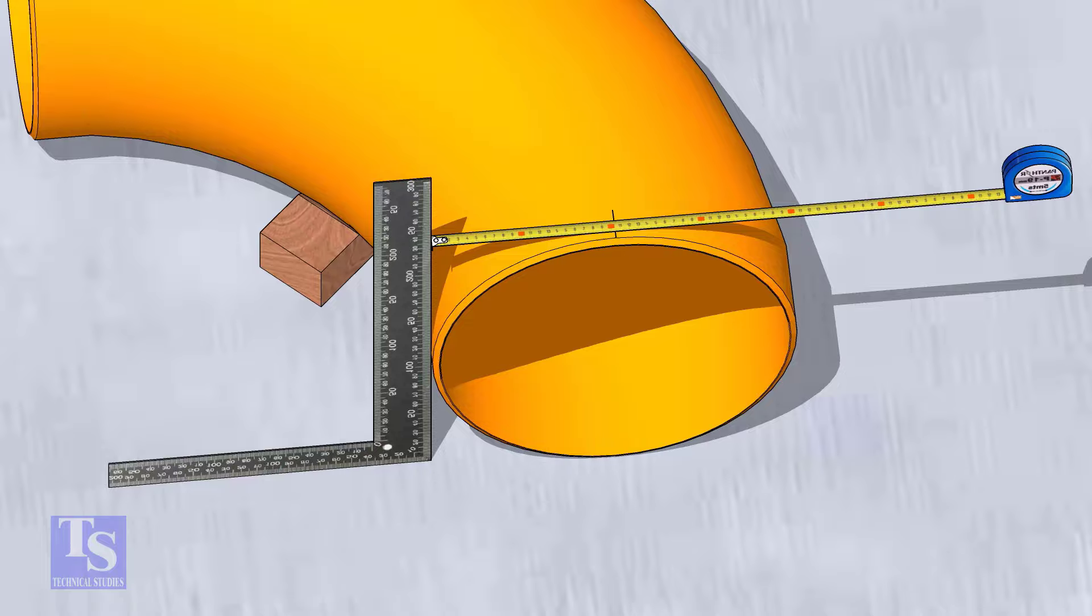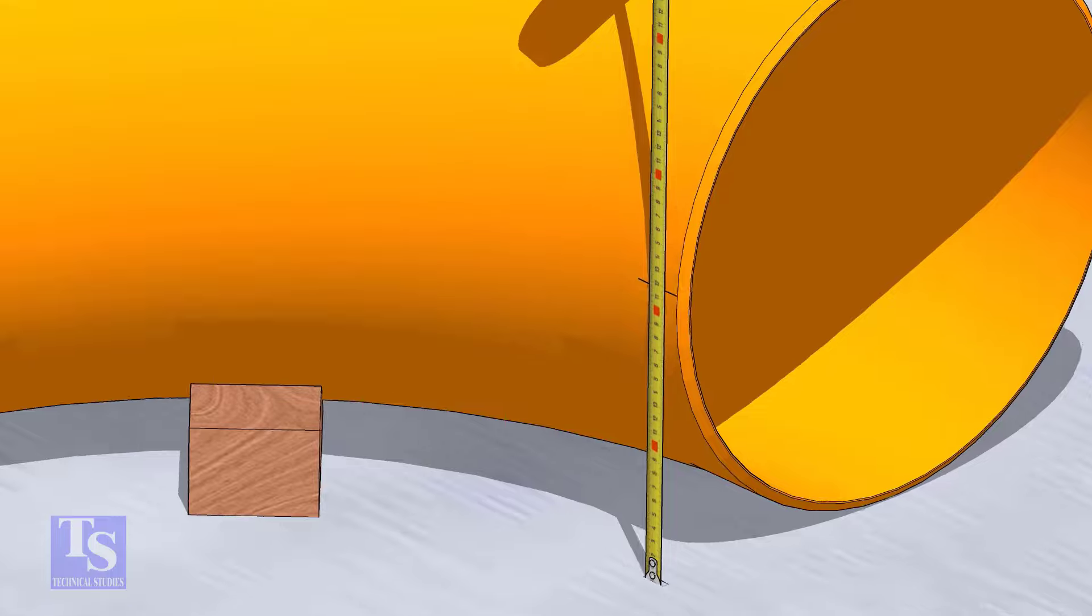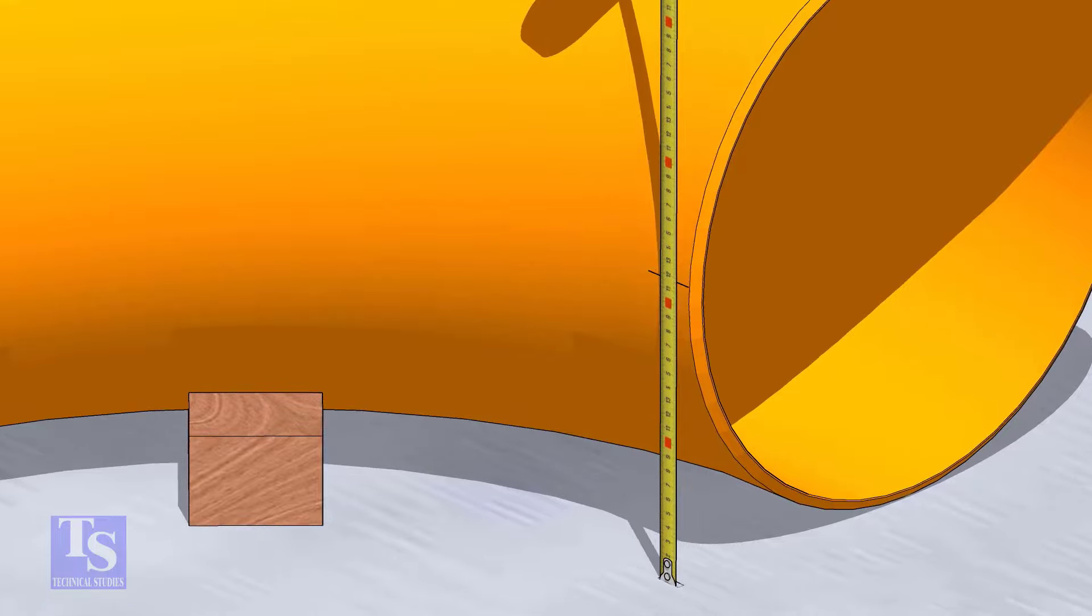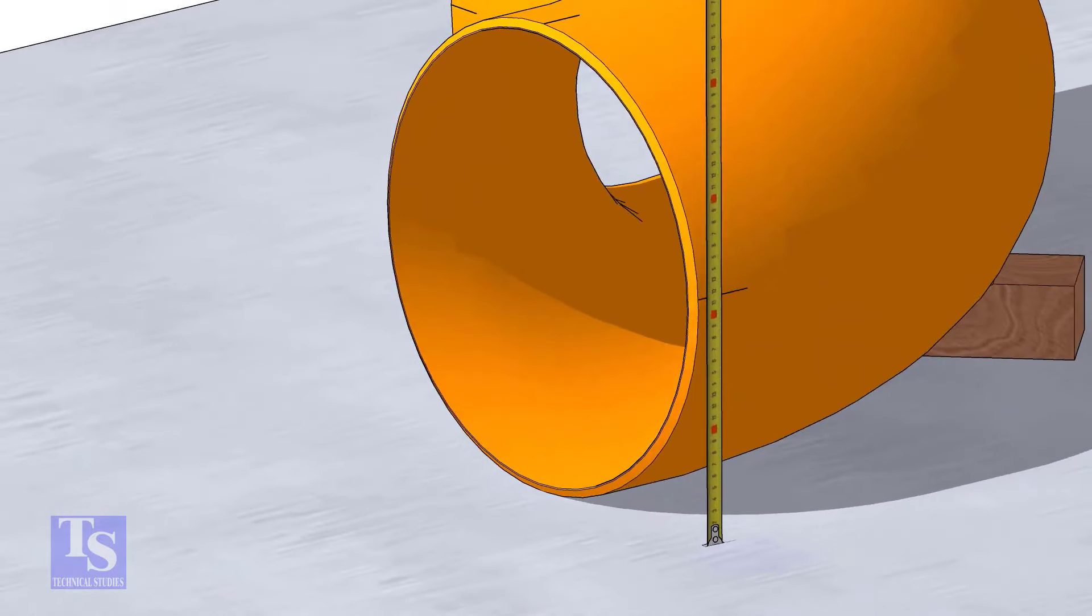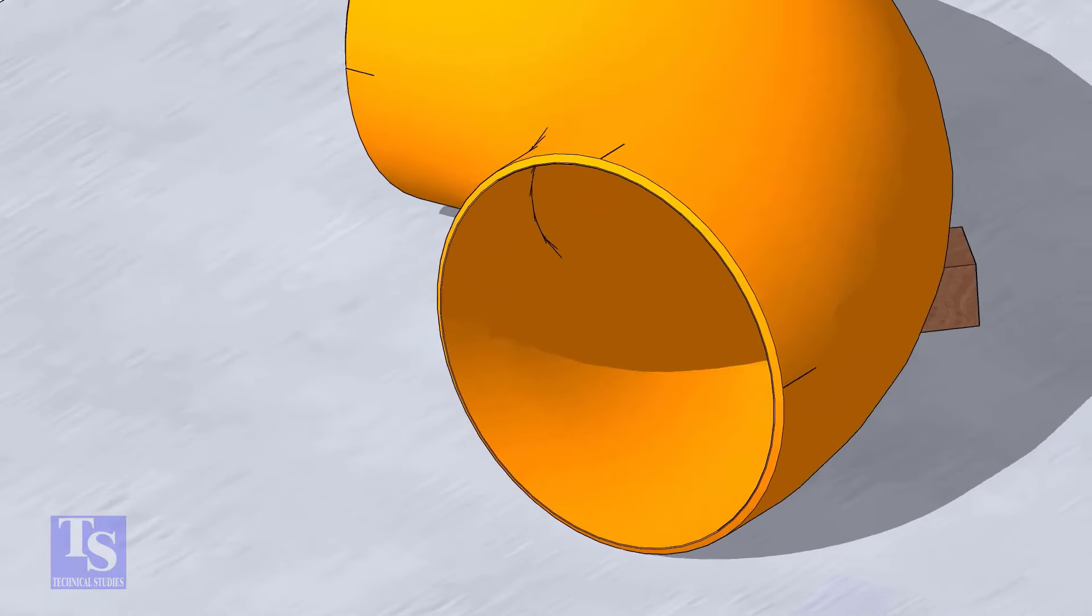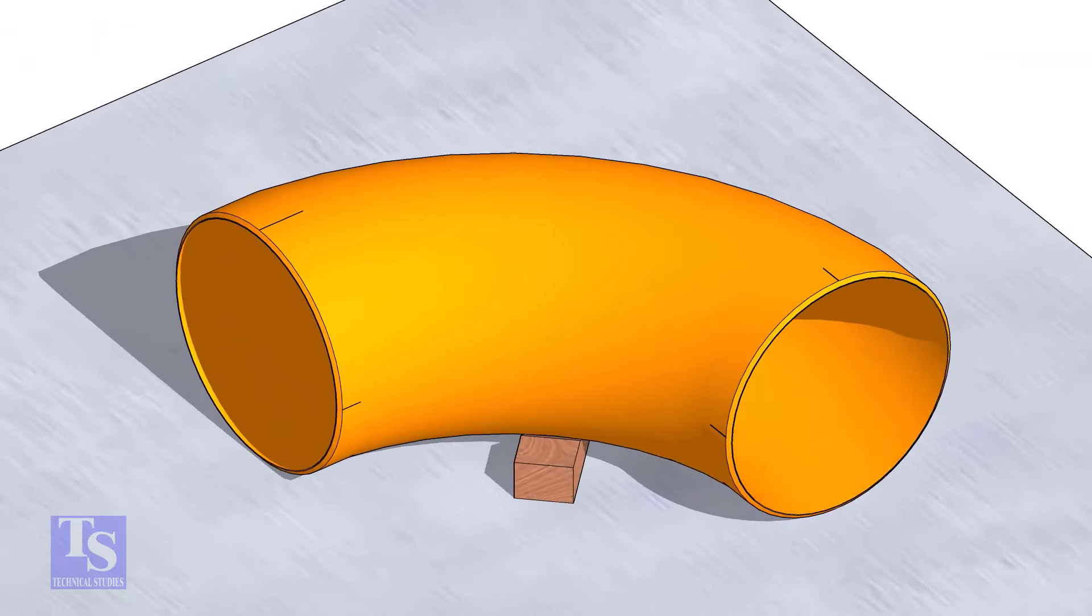Mark half diameter from the plate to the elbow on both sides as shown. Repeat the process and mark the quarters on the other end of the elbow. Rotate the elbow and mark the bottom side quarter also.